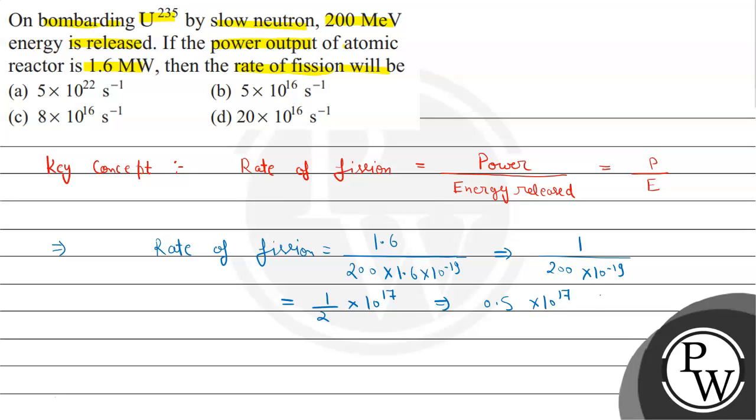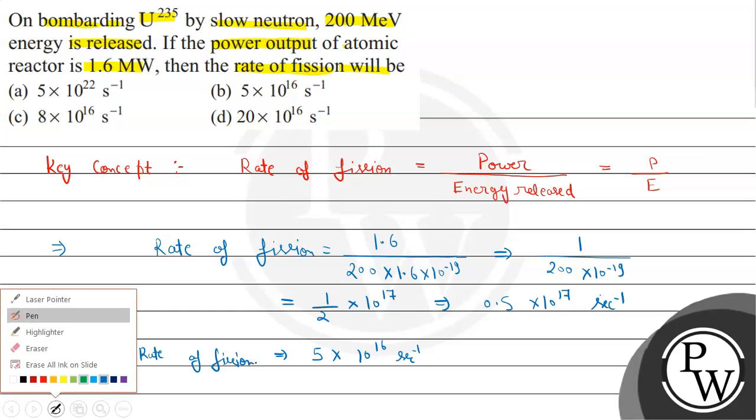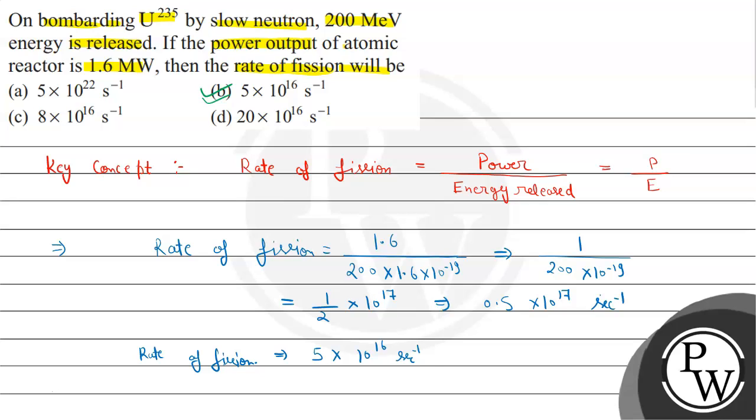The unit will be second inverse. Decimal point aayega to yeh hoga 5 into 10 to the power 16 second inverse. This is our rate of fission. If we match this with our options, then option B matches with our solution, so our correct option is option B.